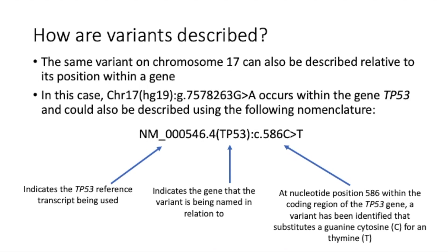The gene name that this variant is being named in relation to is noted in parentheses — in this case, it is the TP53 gene. Finally, the numbers and letters at the end show that in the TP53 transcript being used as a reference sequence, at nucleotide position 586 in the coding region of TP53, the reference nucleotide is a C and a variant is present, where the C, or cytosine, nucleotide has been substituted for a T, or thymine, nucleotide.